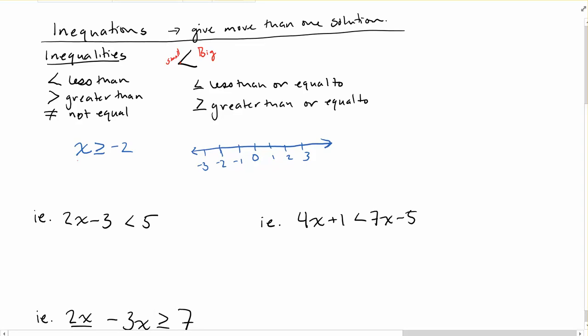An example: if I tell you that x is greater than or equal to negative 2, because the pointy end is pointing at negative 2, I know that x is bigger than everything above negative 2 and can be equal to it. So x could be negative 2, but it could also be negative 1, negative 1.5, 0—it could be any of those things.